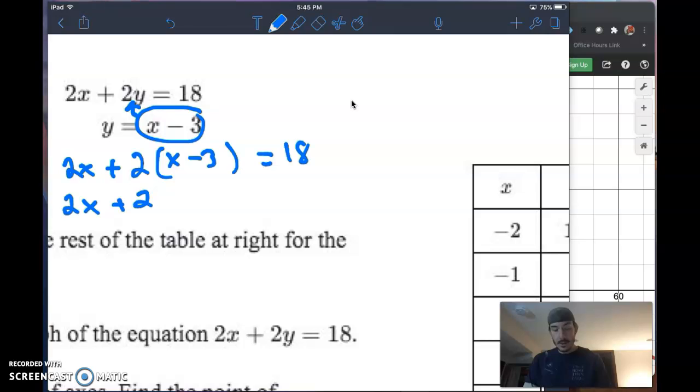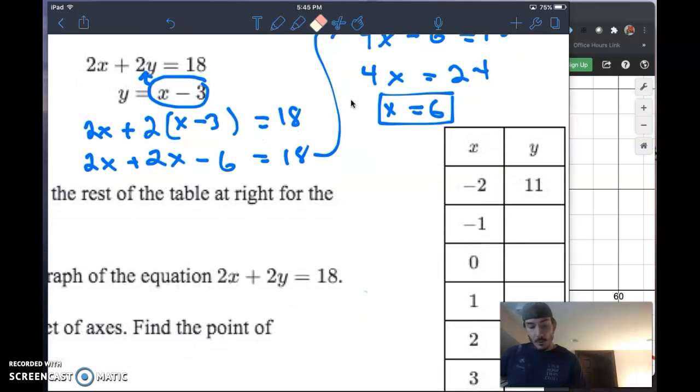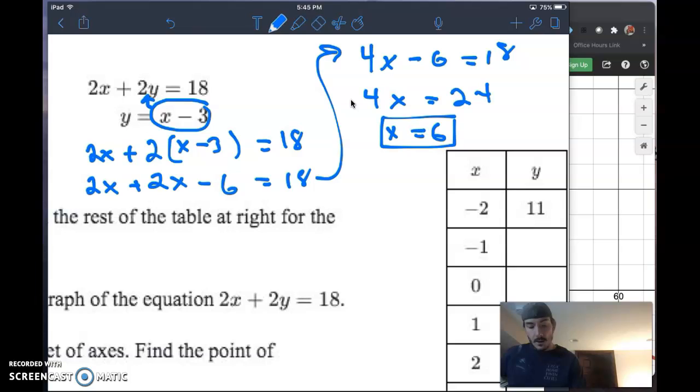2x plus 2 times (x minus 3), right, if I distribute that 2, equals 18. Now I've got to do a little bit of math. That gives me 4x minus 6 equals 18. Now I'm going to add 6 to both sides. If I add 6 to both sides, I get 24. Then I divide by 4, I get x equals 6. There is one solution. But I need now a solution for y, so I'll plug this back in for x. I get y equals 6 minus 3, y equals 3.